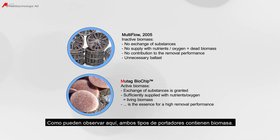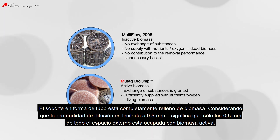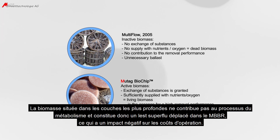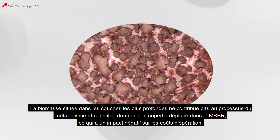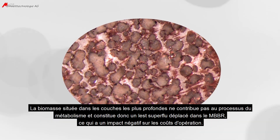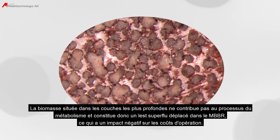As you can see here, both carrier types contain biomass. The tube-shaped carrier is completely stuffed with biomass, but the limited diffusion depth of 0.5 mm takes its toll — only 0.5 mm of the external space is occupied with active biomass. All deeper layers cannot be supplied with nutrients and oxygen since the biofilm is simply too thick. All biomass in the deeper layers does not contribute to metabolism and is unnecessary ballast still being moved around the MBBR, negatively impacting operational costs.